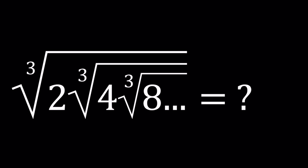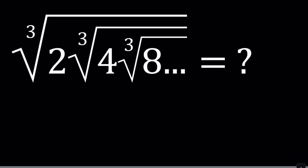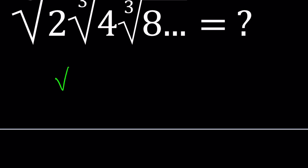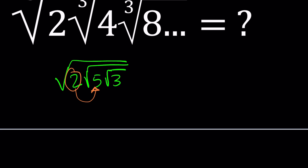To be able to simplify this, there are usually two ways to approach it. One method: let's think of a simpler, finite case. Let's say you had the square root of 2 times the square root of 5 times the square root of 3. One thing we can do is take the 2 on the outside and put it inside, so the square root of 2 basically means the square root of 2 squared. We're only dealing with positive quantities here.